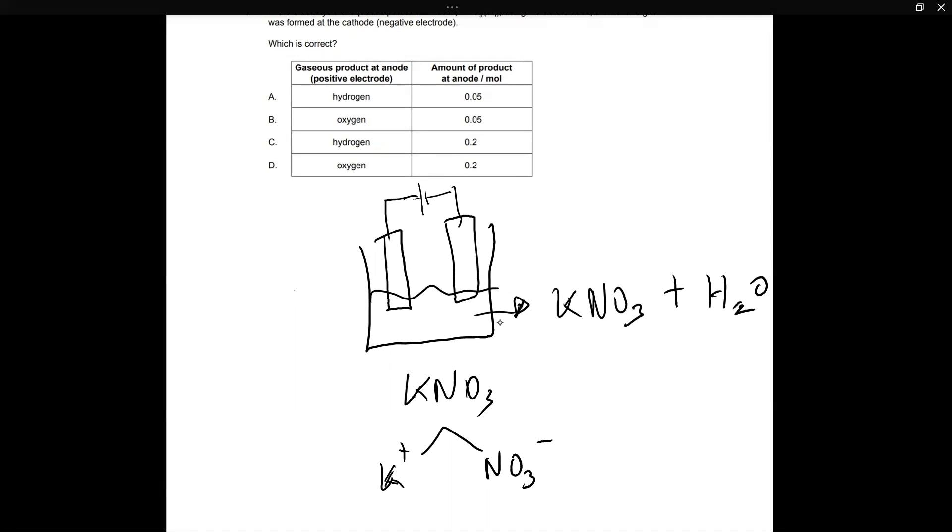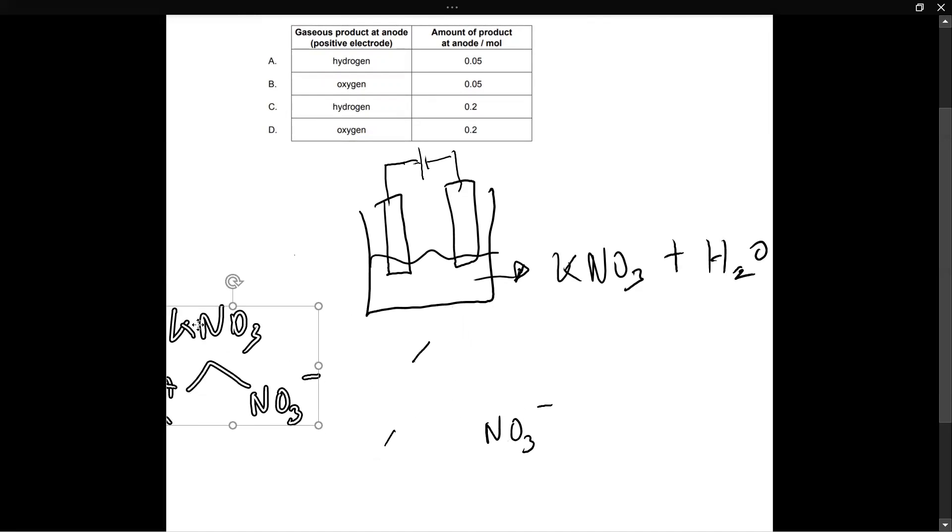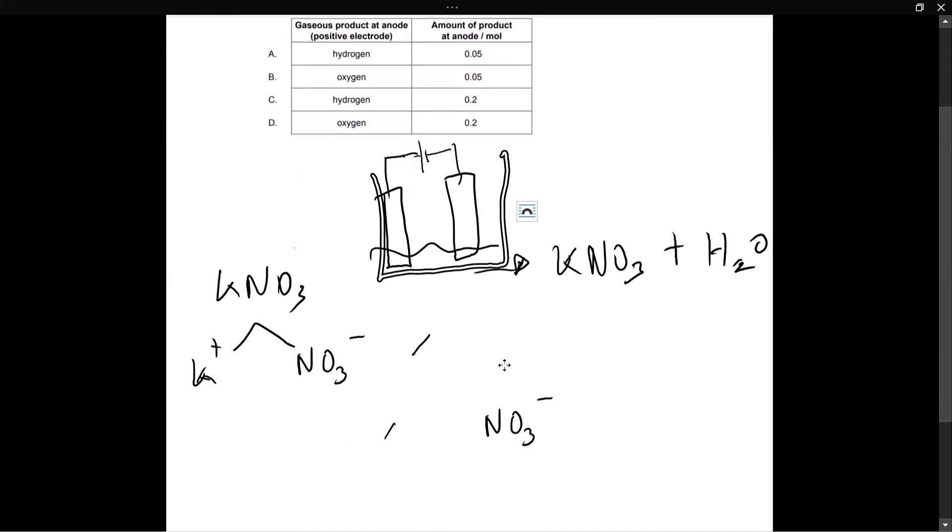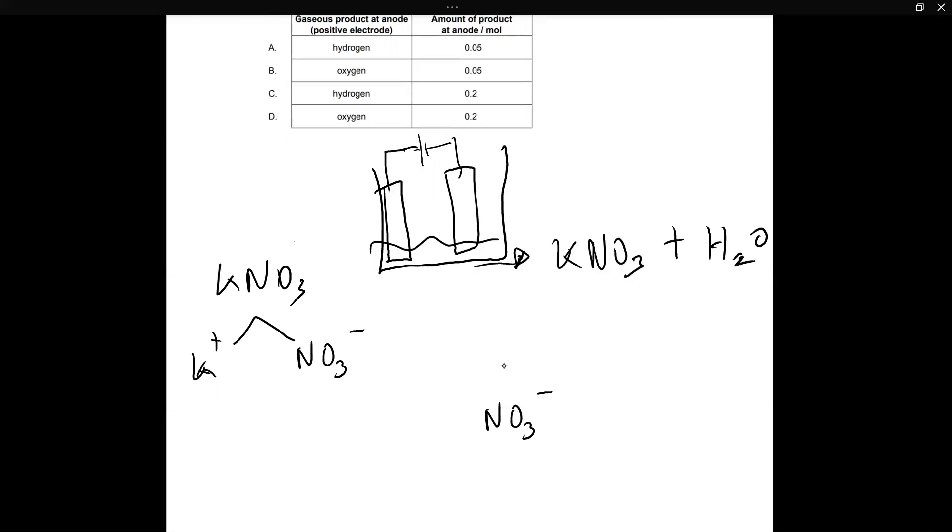Anyways, so we said that we split KNO3 into K plus and NO3 minus using the power of electricity. But remember, there's also in this solution over here, water also exists. So when we run a current through the solution, we're not only splitting KNO3, we are also splitting water. So water also breaks apart into H plus and OH minus.